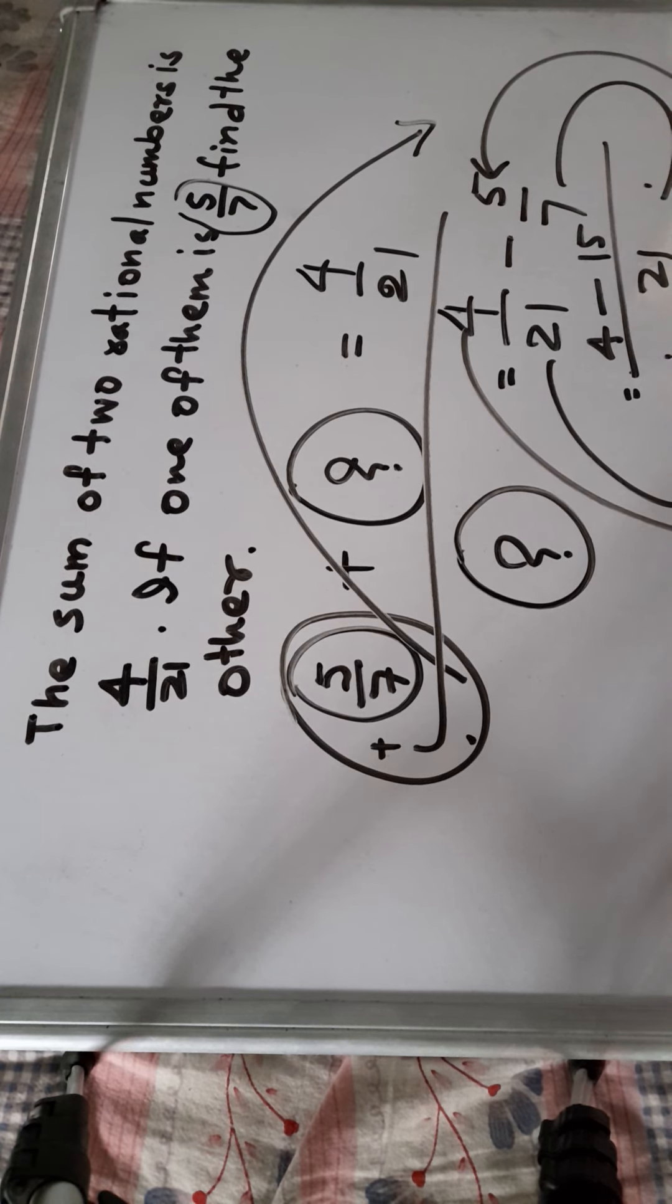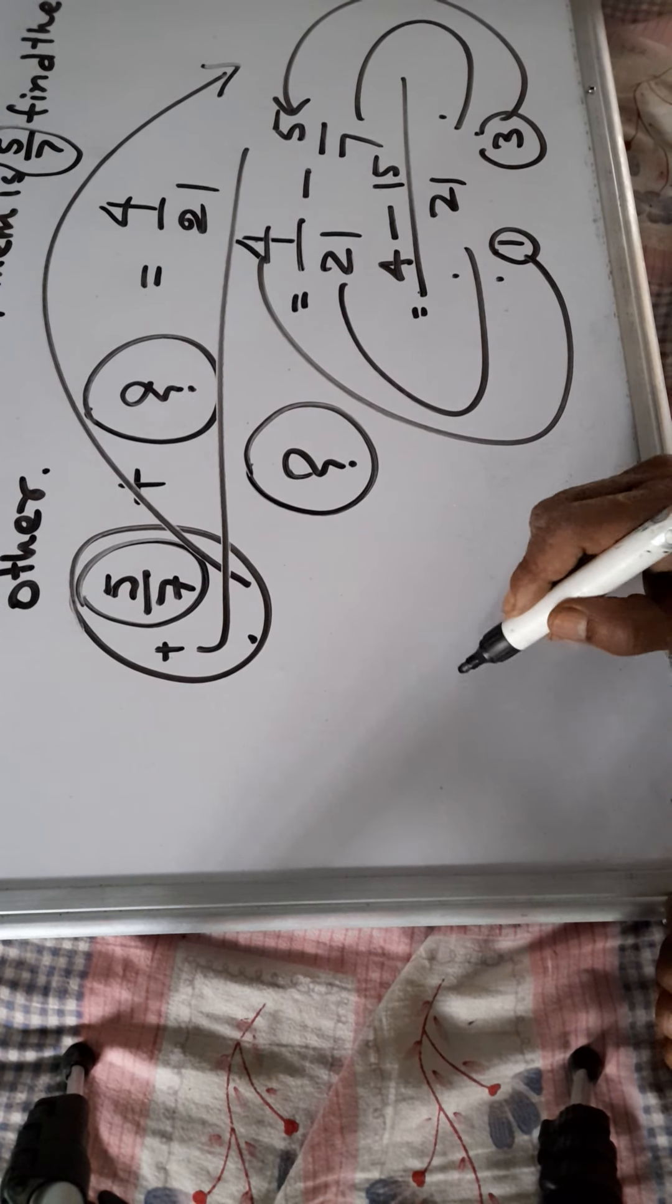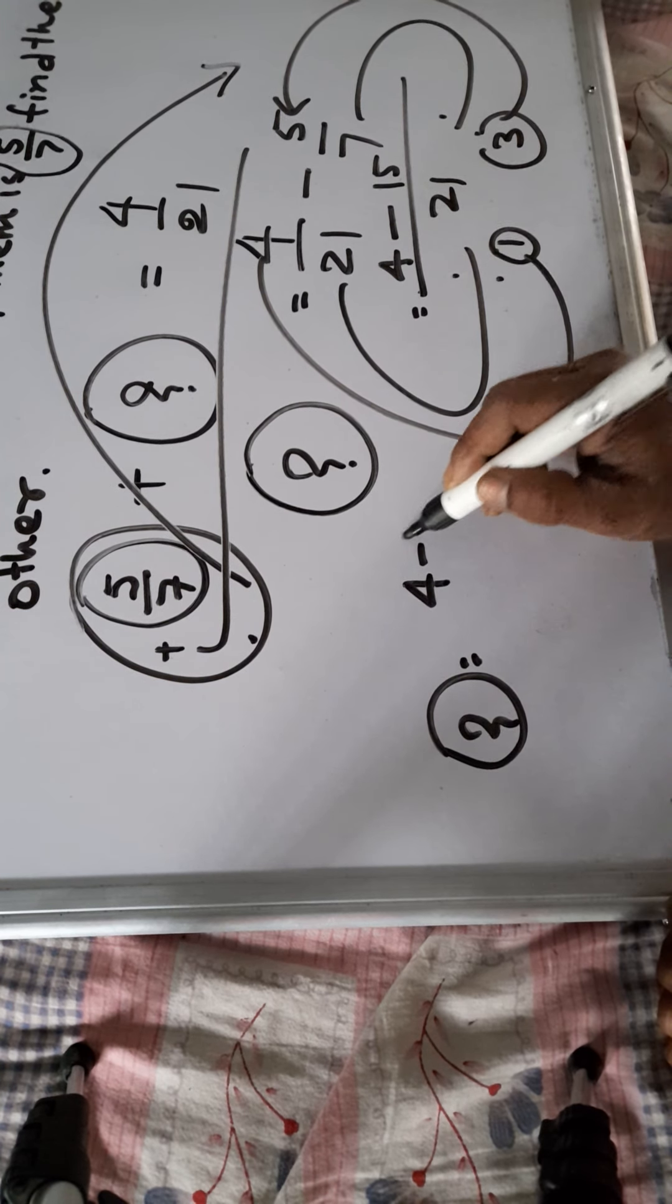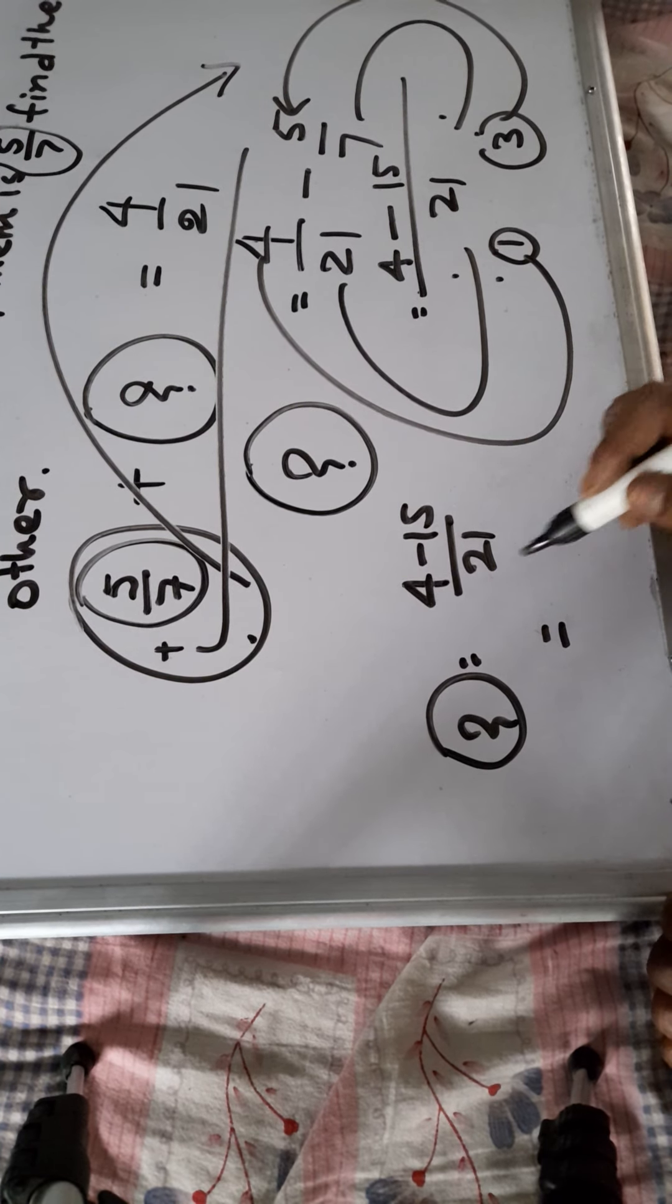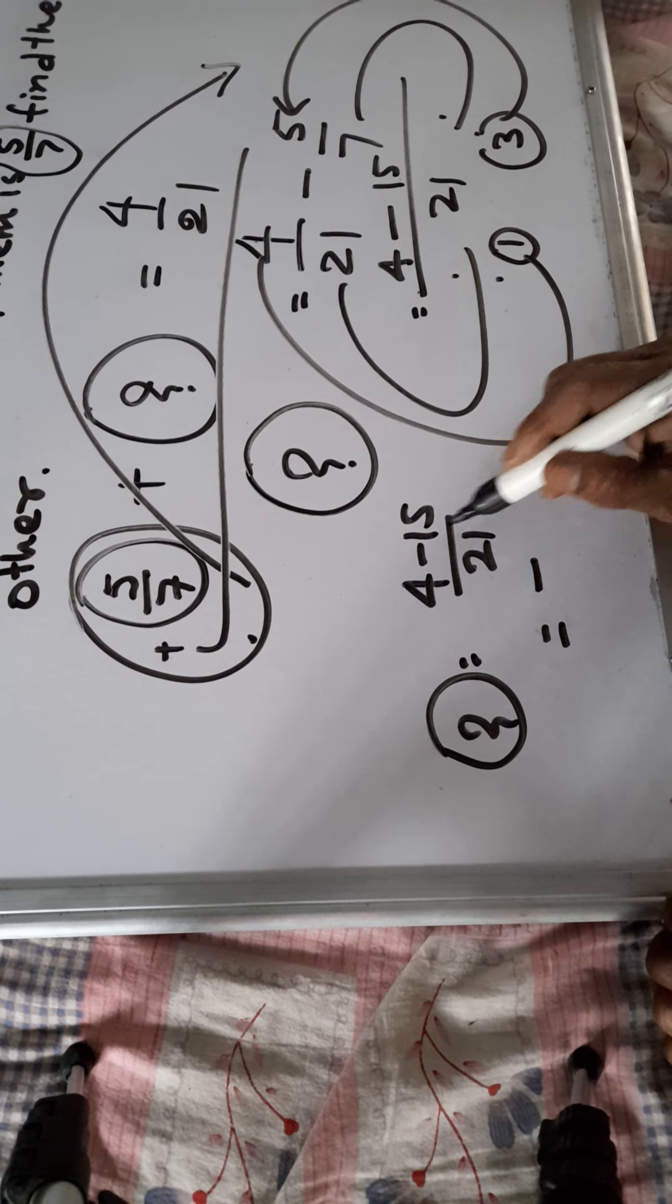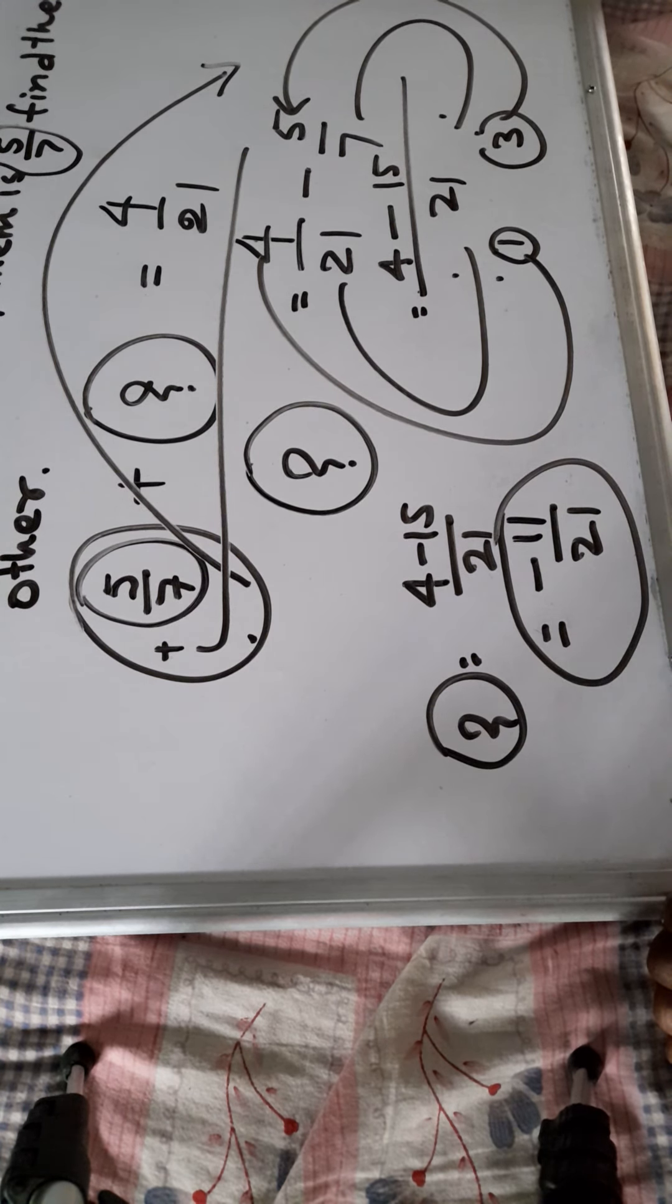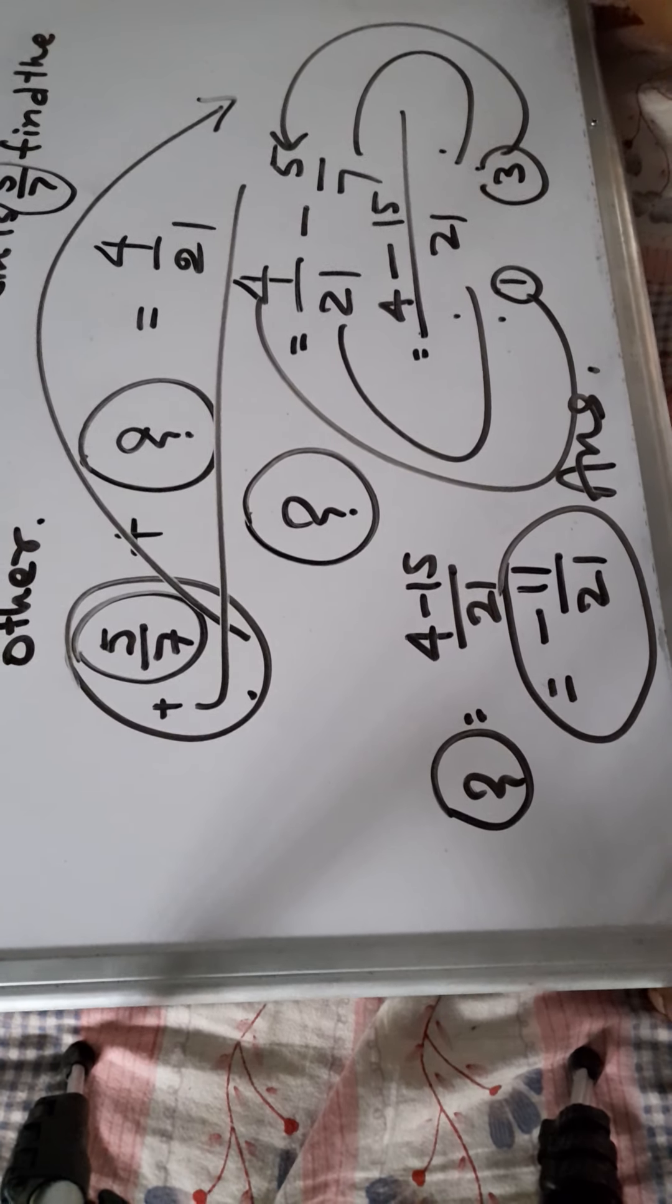So it is the other number is 4 minus 15 by 21. 15 minus 4 that is 11 by 21 and that is minus is greater so it will minus the remainder and 15 minus 4 that is 11 by 21. Minus 11 by 21 is the another number and this is the answer.